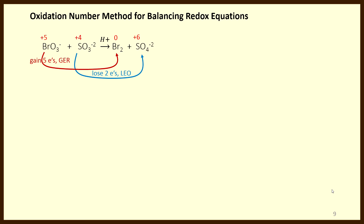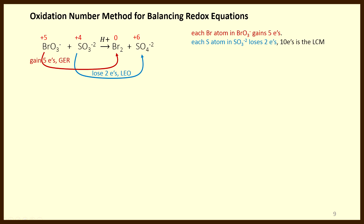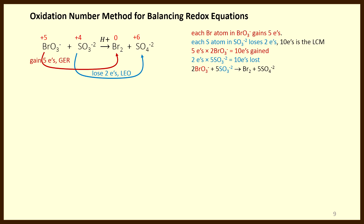There is a simpler method for balancing redox equations. We've been using the half-reaction method; this next method is called the oxidation number method. Using oxidation numbers, we can calculate the combining ratio. Each bromine atom in bromate is gaining 5 electrons; each sulfur atom in sulfite has lost 2 electrons, so 10 is the lowest common multiple of 2 and 5. We need 2 bromates each gaining 5 electrons (10 electrons gained) and 5 sulfites each losing 2 electrons (10 electrons lost). From that we write a stoichiometric ratio of 2 bromates for every 5 sulfites.